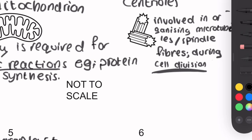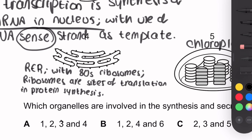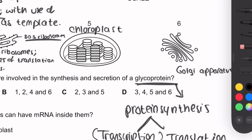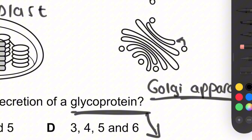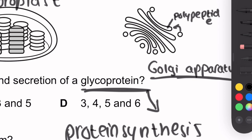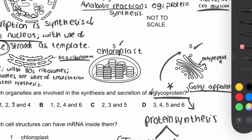Number 4 is the rough endoplasmic reticulum (RER), which has attached ribosomes — that's why it looks rough. Ribosomes are the site of translation and polypeptide synthesis. The RER packages and transports polypeptides in shuttle vesicles to number 6, the Golgi apparatus. In the Golgi, the polypeptide is processed and undergoes glycosylation — the fusion of a protein with a carbohydrate to form a glycoprotein. So organelles 1, 2, 4, and 6 are the answer: letter B.